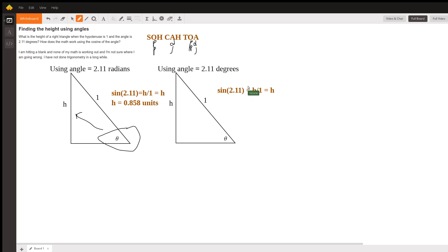If I put my calculator into degrees and I do this calculation, I type in sine of 2.11 and I get that the height equals 0.0368, whatever the units are.